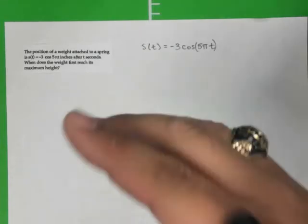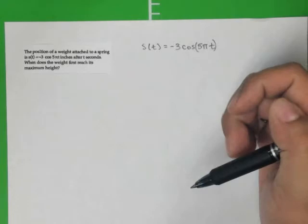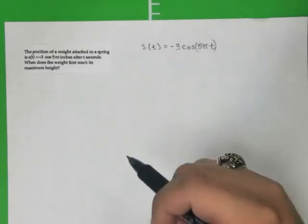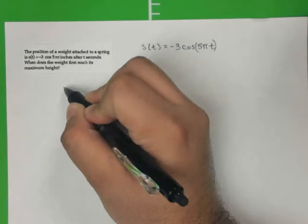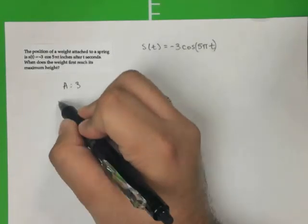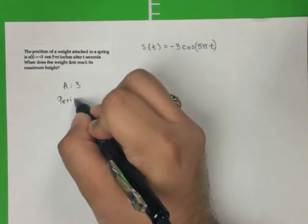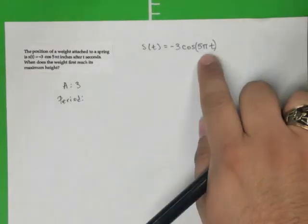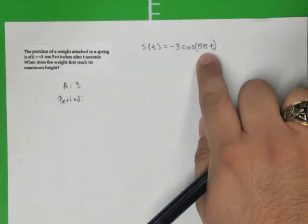So what we're going to do, we're going to write down some information, but ultimately I think the best way to approach this problem is to graph it. So let's see here. If the amplitude is 3 units, the period can be found by saying, well, 2 pi over k, and this is our k value.